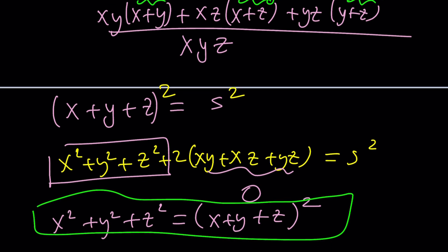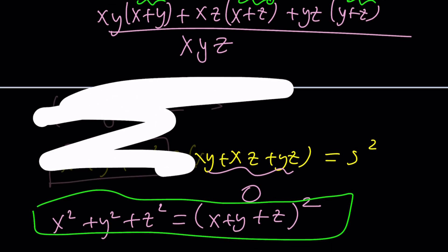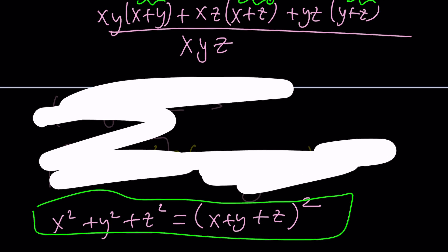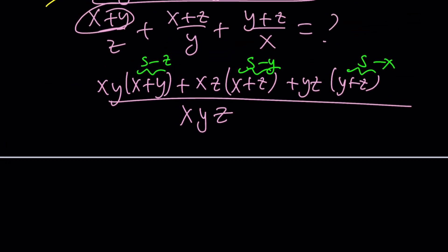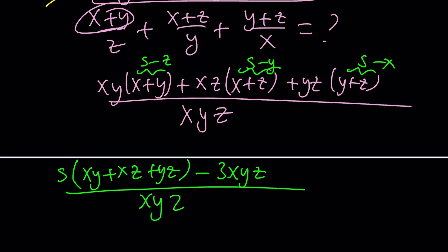We also know this so we might be able to use it later. When we distribute this we're going to get xys, xzs, so take the xs out we're going to get xy plus xz plus yz and then we're going to multiply negative z by xy that's going to give us negative xyz three times and that'll be divided by xyz.